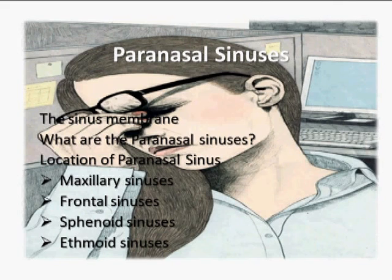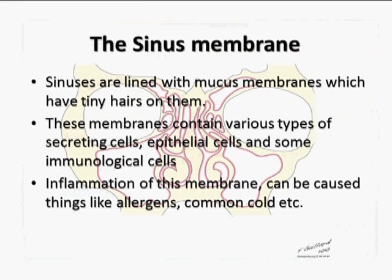Let's first look at the sinus membrane. The sinuses are lined with mucous membranes which have tiny hairs on them. These membranes contain various types of secreting cells, epithelial cells, and some immunological cells. Inflammation of this membrane can be caused by things like allergens, the common cold, etc.